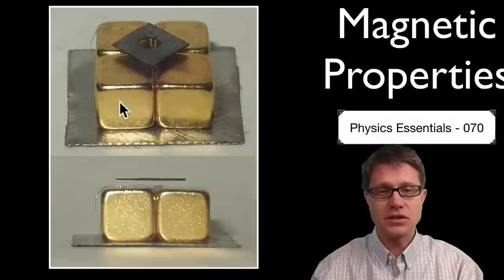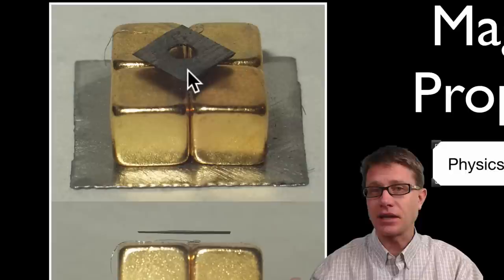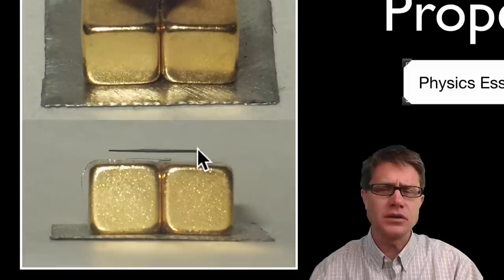But it depends on what that material is as to how it responds to magnetic fields. And so these are giant magnets down here on the bottom. But on top of it we have carbon. And carbon is a diamagnetic. And so it is actually opposed to these magnetic fields and it will hover over the surface of these magnets.